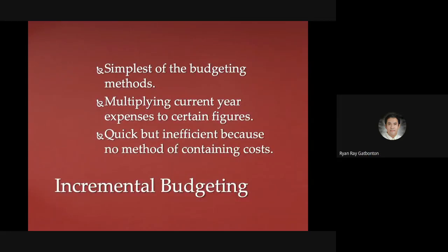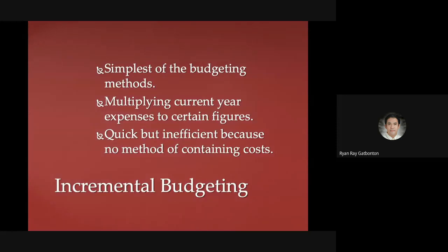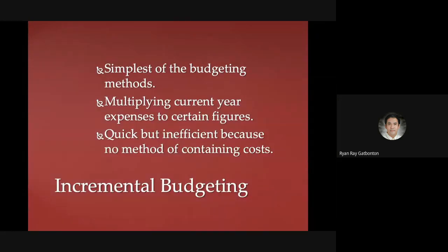Here are some budgeting methods. When we say incremental budgeting, this is the simplest mode — you just multiply your previous budget by a certain economic figure, usually the inflation rate. It's quick, but inefficient, because there's no method to contain your cost. You cannot identify what caused budget shortage or savings, and you are not re-justifying your budget every year.